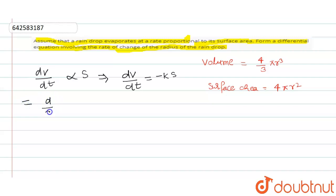d/dt of volume equals d/dt of 4/3 π r³. That equals -k times 4π r², which is the surface area.